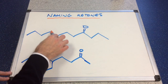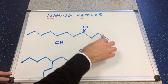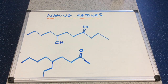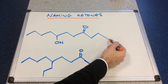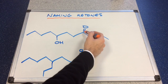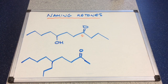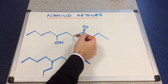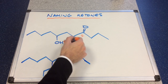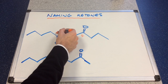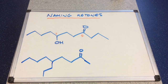Let's get into naming it now. The chain is eleven carbons long — 11 carbons is 'undec', so we think of 1 and 10. The C double bond O is at carbon number four, so this is going to be undecan-4-one. And then we keep counting to find the position of the hydroxy group: 5, 6, 7. So this would be called 7-hydroxy-undecan-4-one.